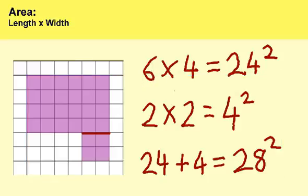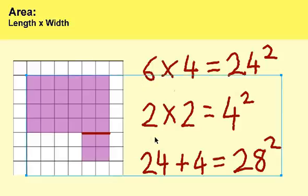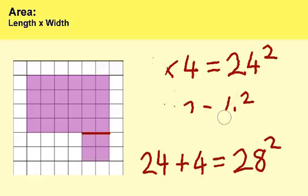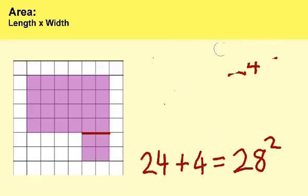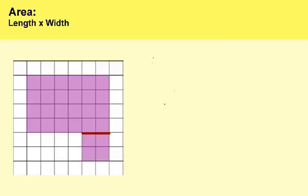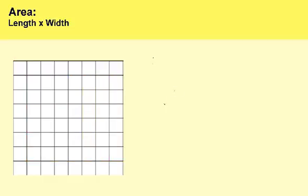Now let's erase this and move on to the second example. We're going to erase all this and enter a new irregular shape with totally different dimensions.